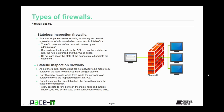Then there are stateful inspection firewalls. A stateful inspection firewall doesn't really care about the packets — it only cares about the state of a connection between two endpoints. As a general rule, connections are not allowed to be made from outside of the local network segment into the protected local network segment. Only the initial packets going from inside the network to a destination outside are inspected against an ACL. Once a connection has been established, the firewall only monitors the state of that connection, allowing the free flow of packets between the inside node and the outside destination as long as the state of the connection remains valid.